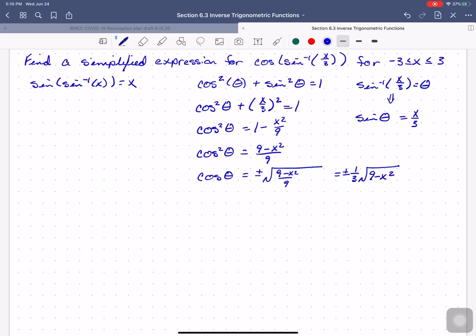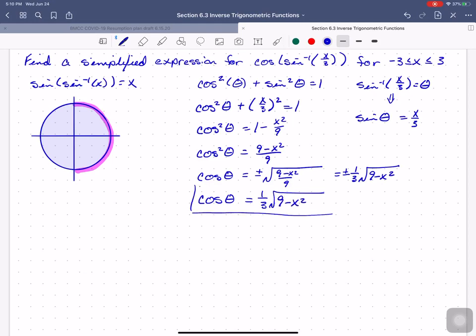And how do we know? Our inverse sine. So we know that inverse sine is limited to one half of the unit circle. Inverse sine is only getting angles on the right hand side of the unit circle. Well within that region cosine is always positive. So we just need the positive square root.